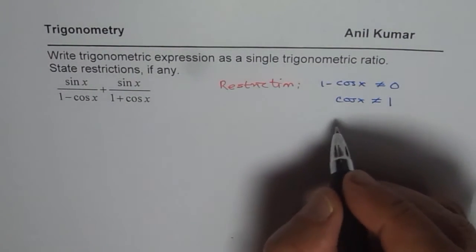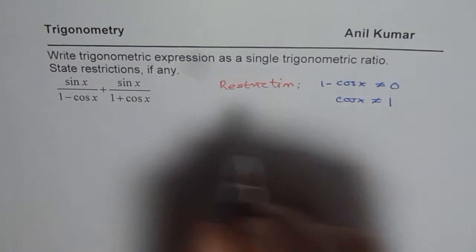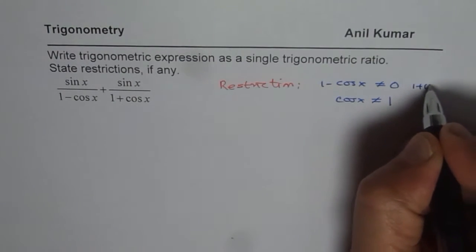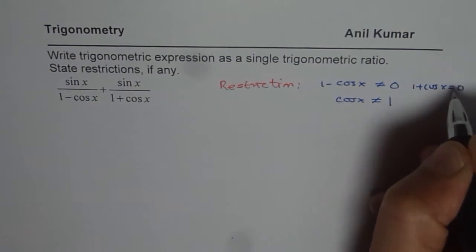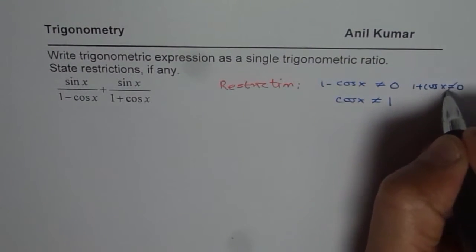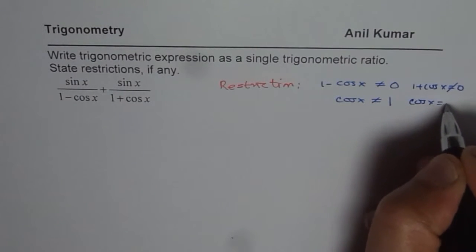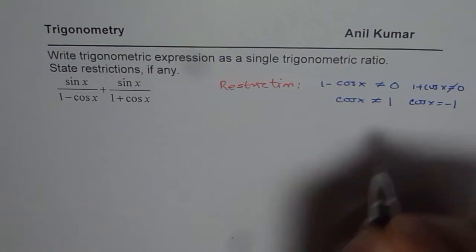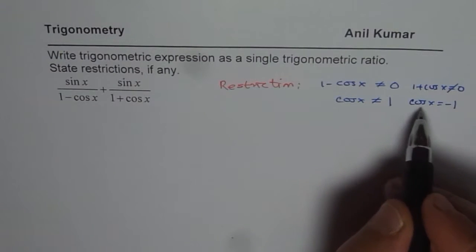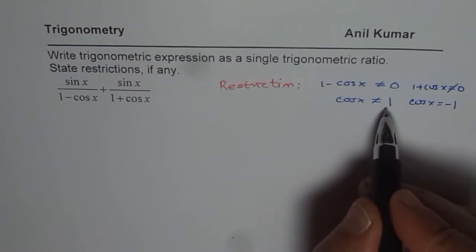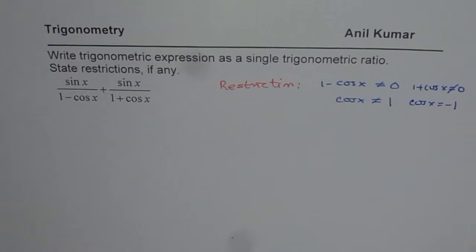The other restriction comes from 1 plus cos x equals 0, which should not equal 0. So cos x should not equal minus 1. Therefore, the restrictions are that cos x cannot equal plus 1 or minus 1.